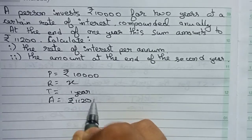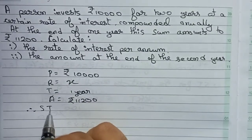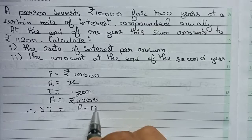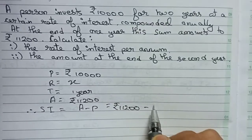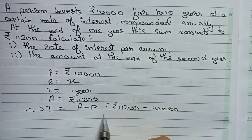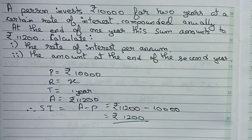We cannot find this with just the amount; we have to find the SI first. The SI formula is amount minus principal, which equals rupees 11,200 minus 10,000, which equals 1,200. Therefore, this is the SI for the first year.